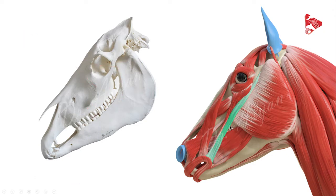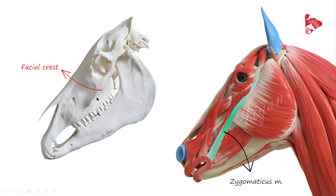The next muscle highlighted in green is the zygomaticus muscle. The zygomaticus muscle originates from the facial crest and inserts to the lateral angle of the mouth, or to the orbicularis oris.